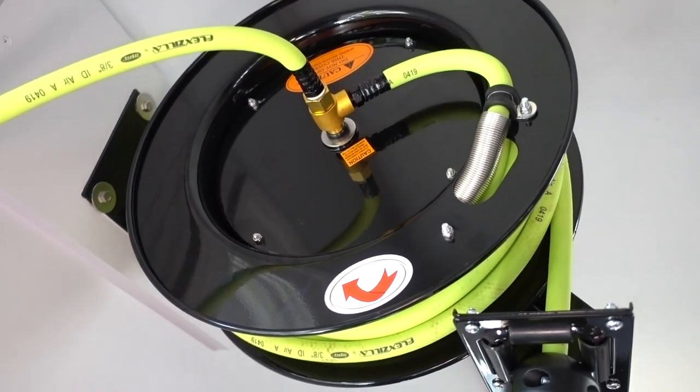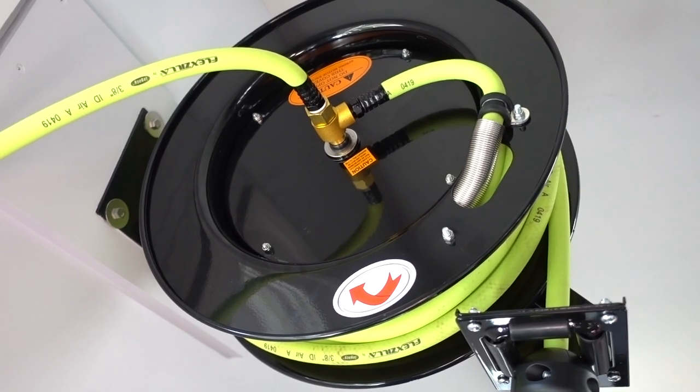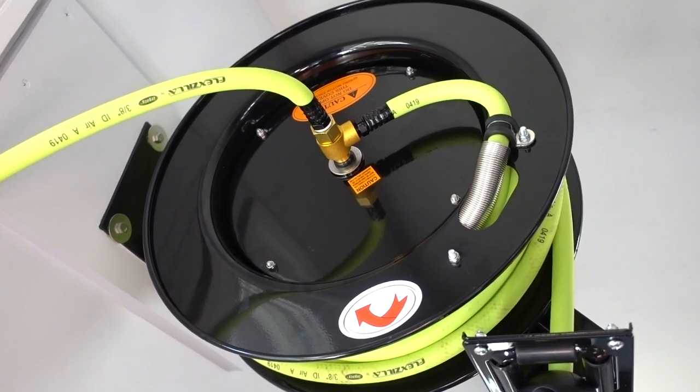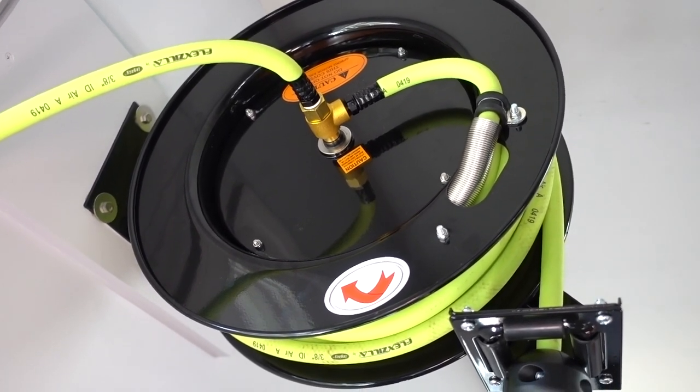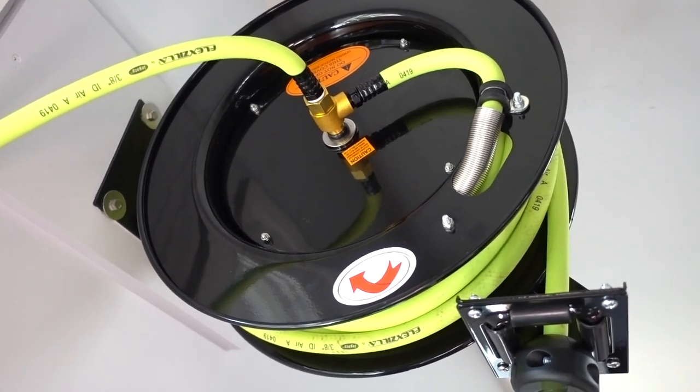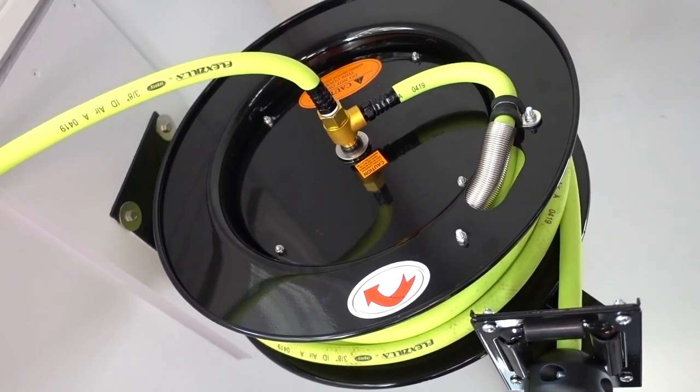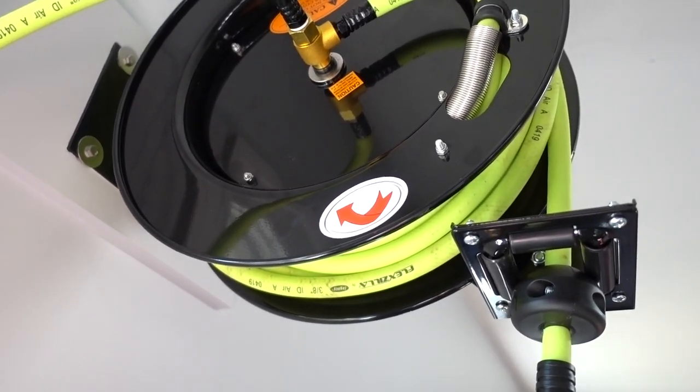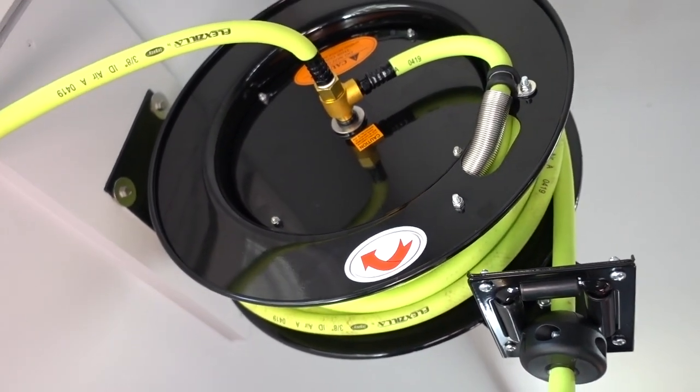This hose reel was about $165 on sale. And the plastic air hose, I saw them on Amazon for I think it was $90. So they both come with 50-foot air hoses, same air hose.